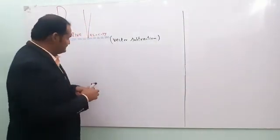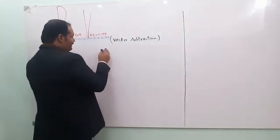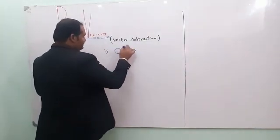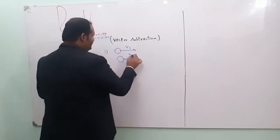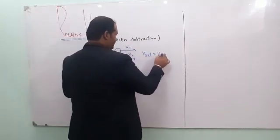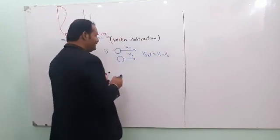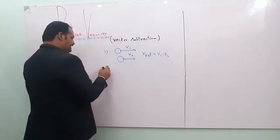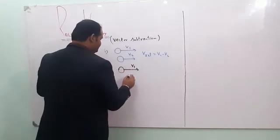In simple terms, if two bodies are moving in the same direction, their relative velocity is found by subtraction. But if they move in opposite directions, relative velocity is found by addition.